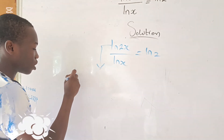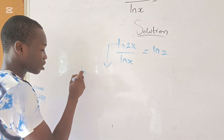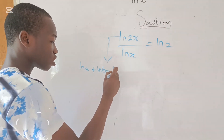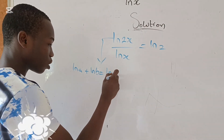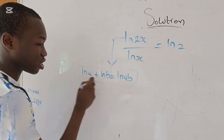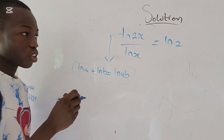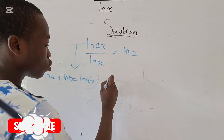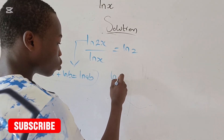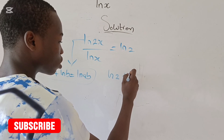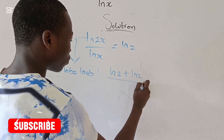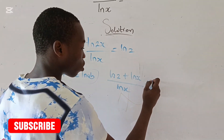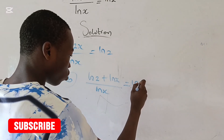We state that the natural log of a plus the natural log of b equals the natural log of ab. So this is what the log addition property states. Writing this in that form, we get the natural log of 2 plus the natural log of x, all divided by the natural log of x, equals the natural log of 2.